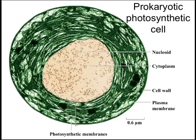Since prokaryotes do not have membrane-bound organelles, they have no way to isolate reactions or components inside their cells. The way they achieve some degree of compartmentalization is by folding the cell membrane and creating these little compartments that are not completely sealed.